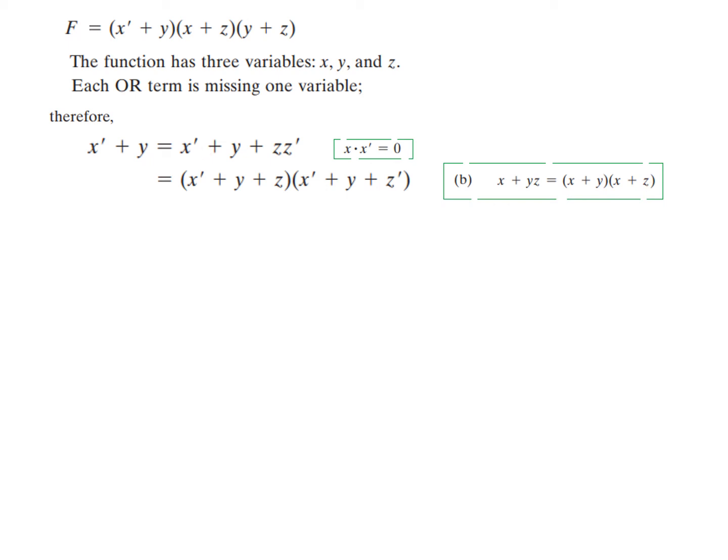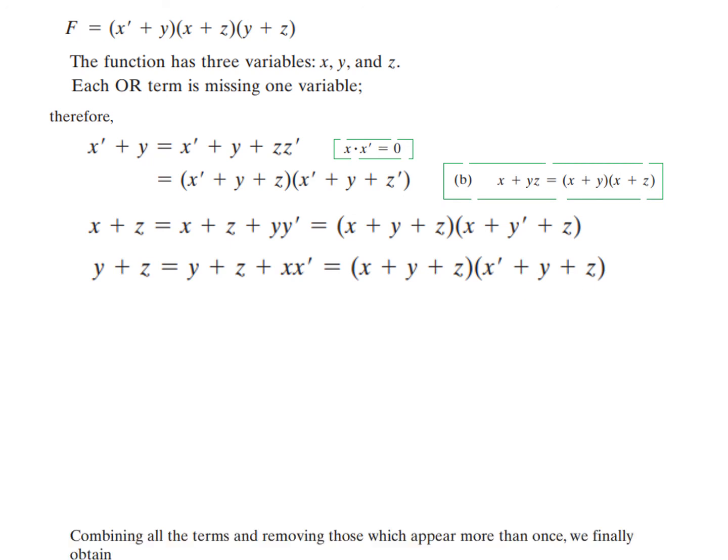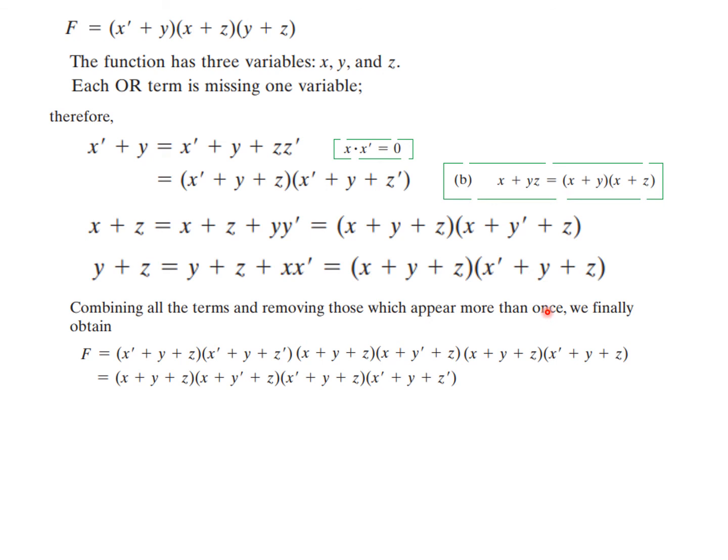So similarly, for x + z we'll follow exactly same technique. Since y was missing, so we'll write yy' which is equal to 0. And then split them as we did here, using this formula. And same way, y + z we are incorporating x'x, and then simplify this.